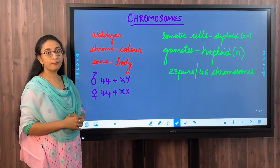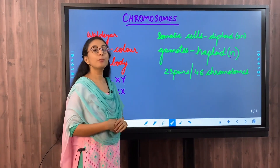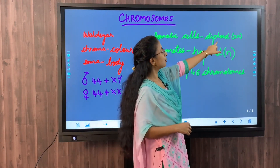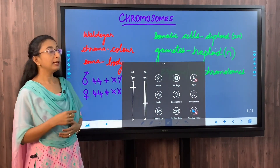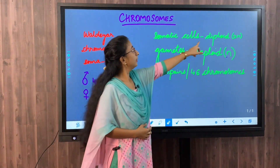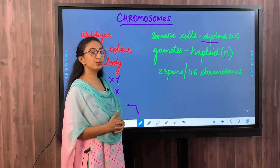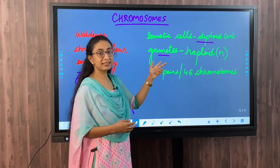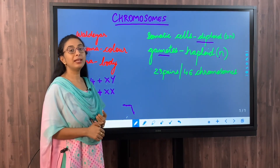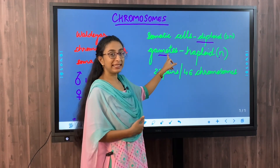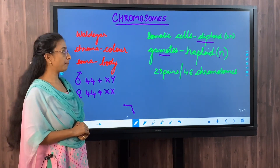The word chromosome is derived from the Greek words chroma, meaning color, and soma, meaning body. We have two different kinds of cells in the body: somatic cells and gametic cells. Somatic cells are body cells and are diploid in nature, that is 2n. Diploid means they have two sets of chromosomes - one set from the father and one from the mother. Gametes or sex cells - ovum in females and sperm in males - are haploid, that is n, having a single set of chromosomes.